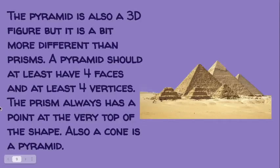The pyramid is also a 3D figure, but it is a bit more different than prisms. A pyramid should at least have four faces and at least four vertices. The pyramid always has a point at the very top of the shape. Also, a cone is not a pyramid.